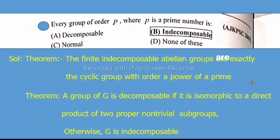with order a power of a prime. Theorem 2 states that a group G is decomposable if it is isomorphic to a direct product of two proper non-trivial subgroups. Otherwise, G is indecomposable. So option B is correct: indecomposable.